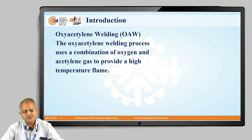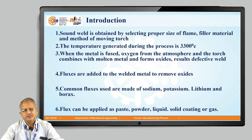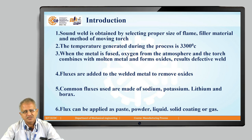Gas welding is synonymous with oxy-acetylene welding. It is a process which uses oxygen and acetylene to provide a high temperature flame. With the help of gas welding, a sound weld is obtained, and different types of flames serve the purpose of processing different types of material. The temperature generated during the process ranges around 3030 degree centigrade to 3480 degree centigrade.